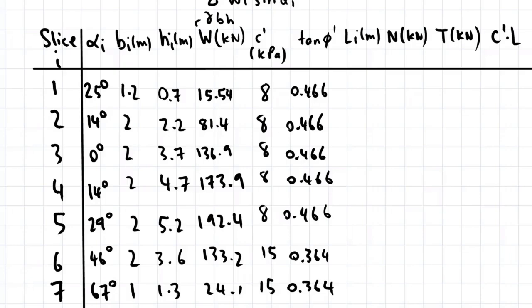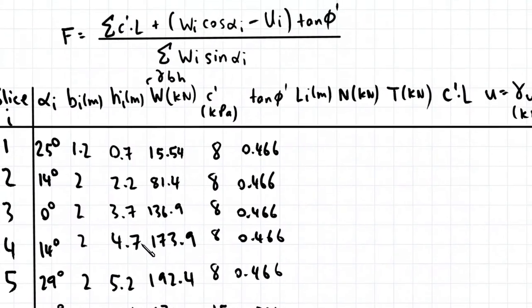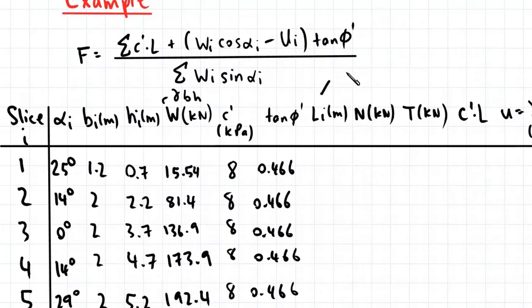Now these calculations are fairly straightforward. So I'll only run you through the working out for the top row now. So L for a particular slice is B divided by cosine alpha. This works out to be 1.32. The normal force N, that's W cosine alpha. So W multiplied by cosine of 25 degrees. That works out to be 14.08 kilonewtons. Our disturbing force T, that's W sine alpha. So this term is found in the base of our factor of safety expression. So that's W multiplied by sine of 25 degrees. That's 6.57. Cohesion multiplied by the arc length of the base of a slice. That's 8 multiplied by 1.32.